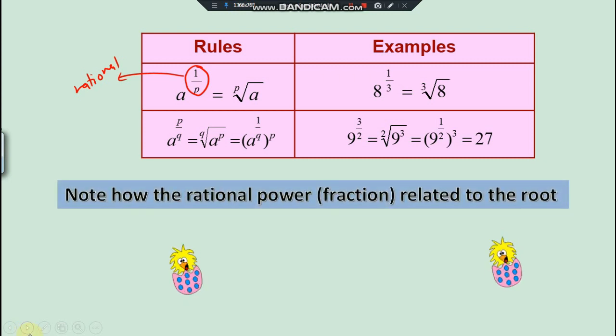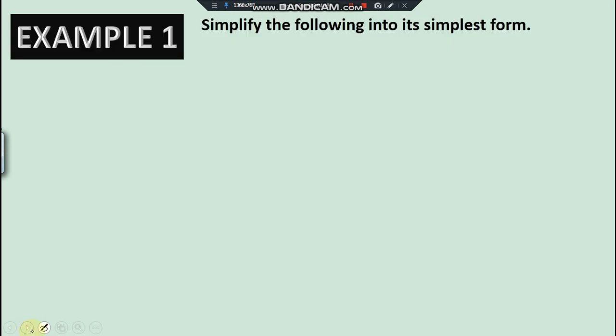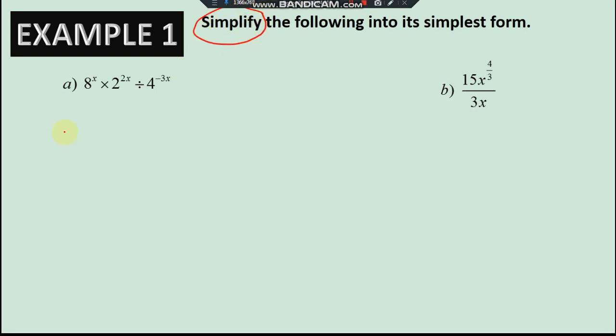All right, so note how the rational power related to the root itself. So let us try this example here. So if we have eight to the power of x times by two to the power of two x, you just have to simplify, guys. So simplify means...